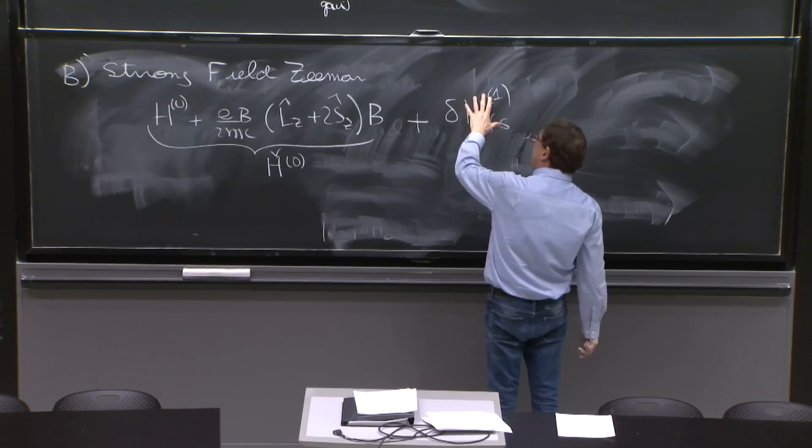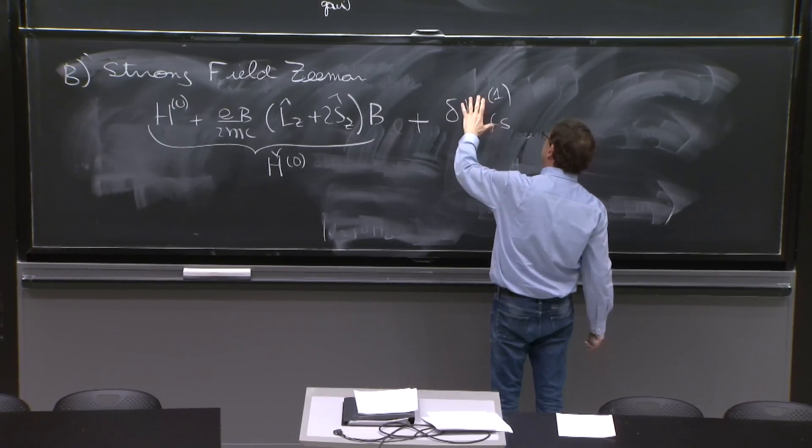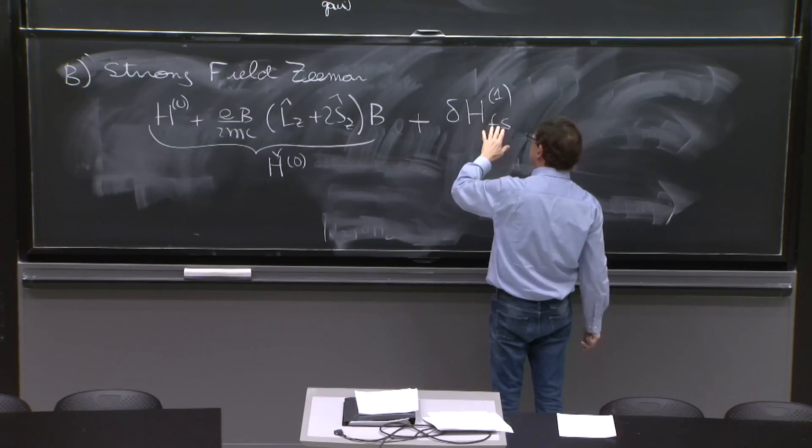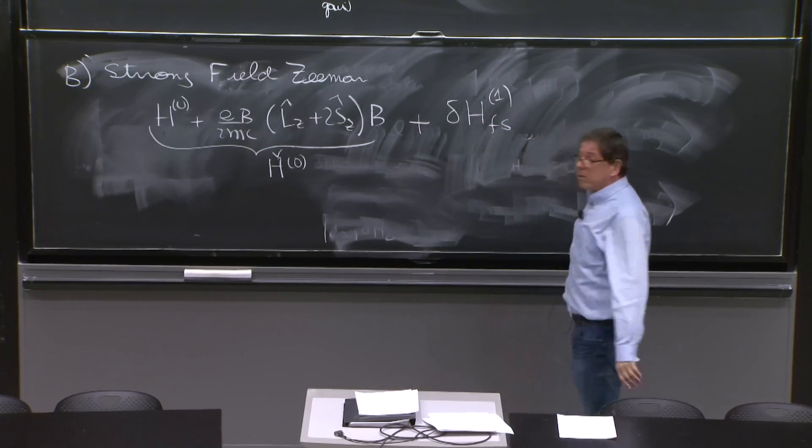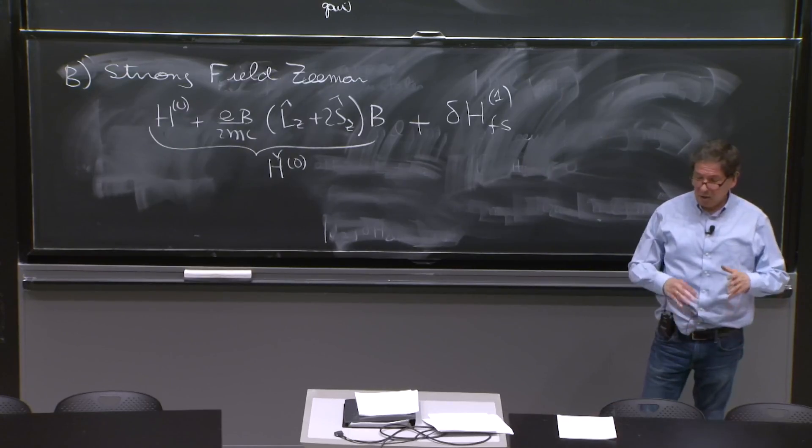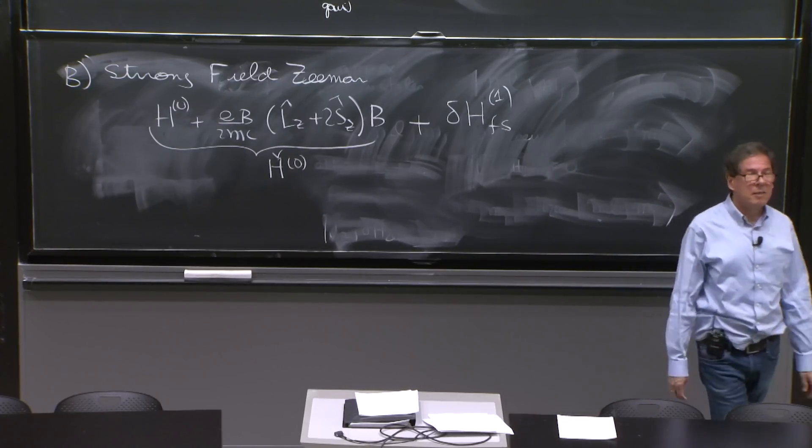On the other hand, when we had h0 plus delta h1 fine structure, we did struggle. And we found those approximate states. Here, the situation happily is surprisingly simple.